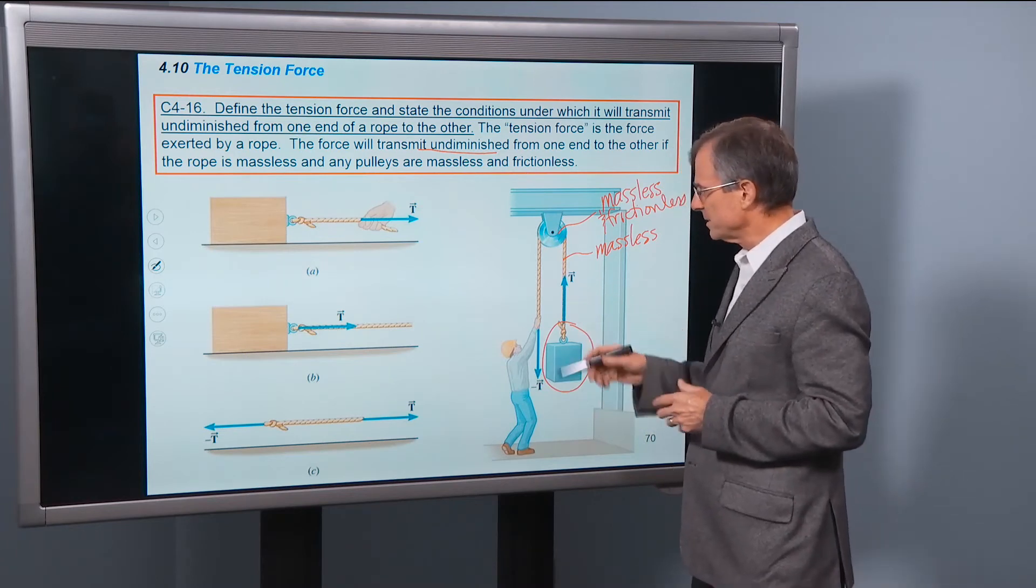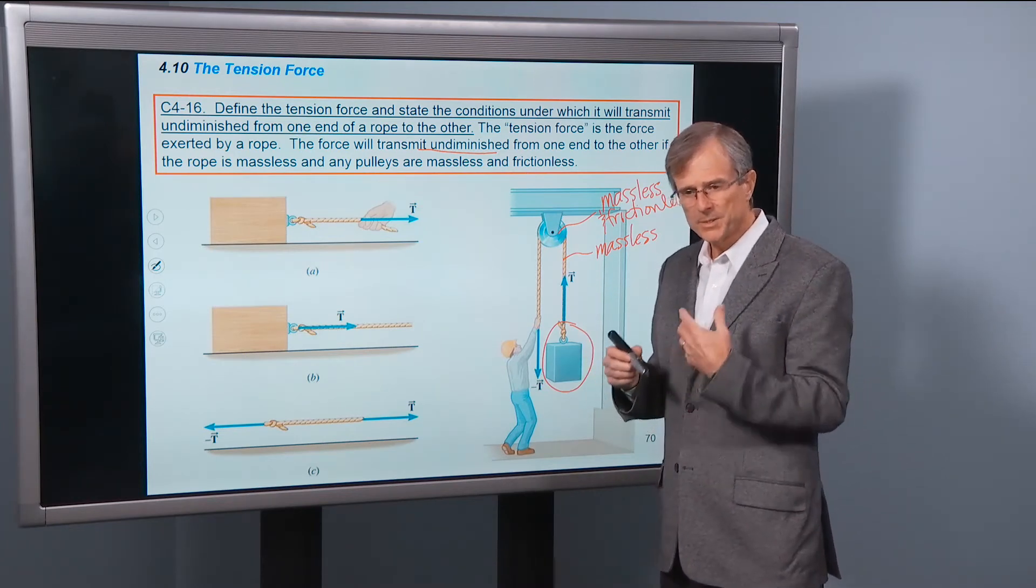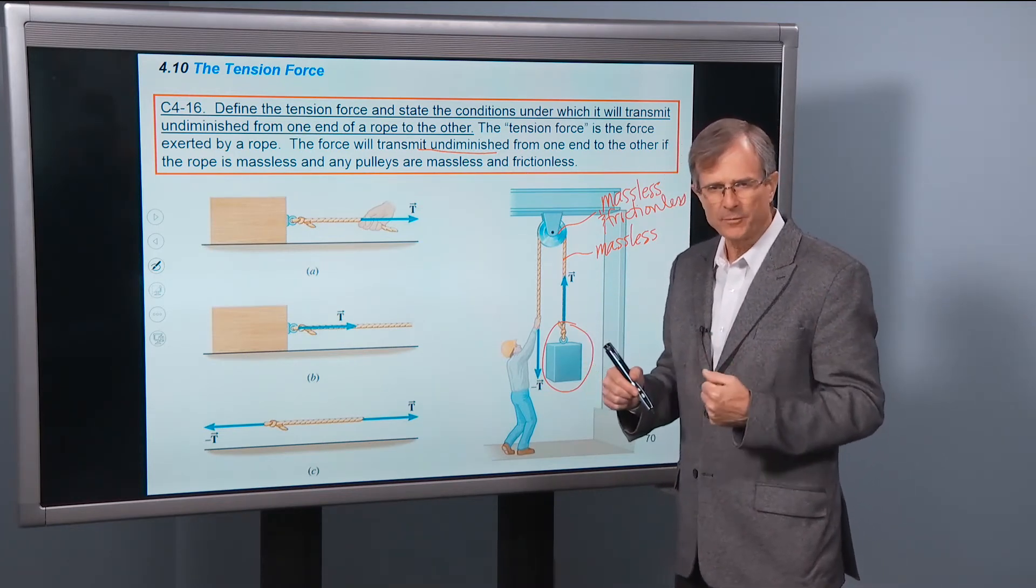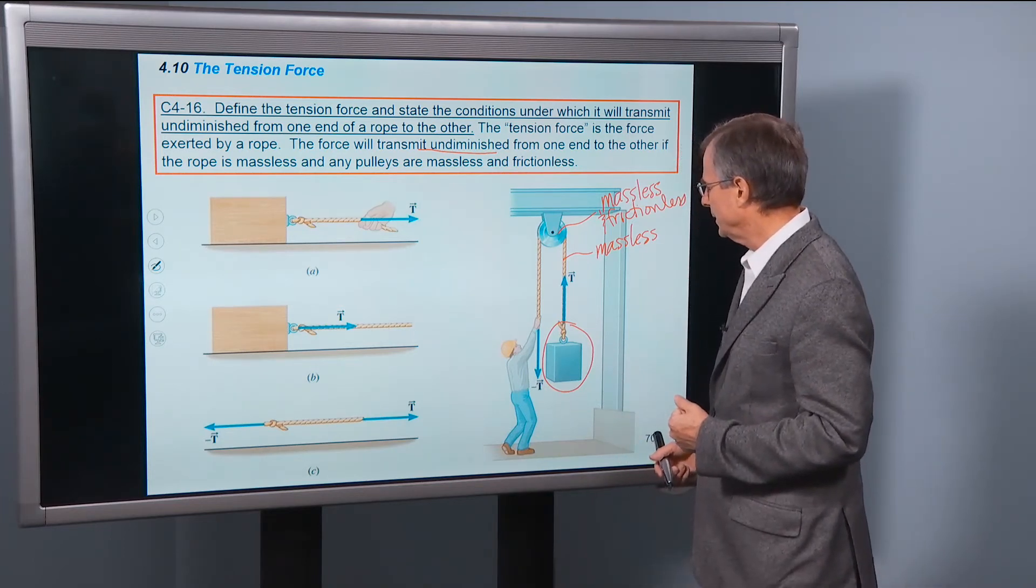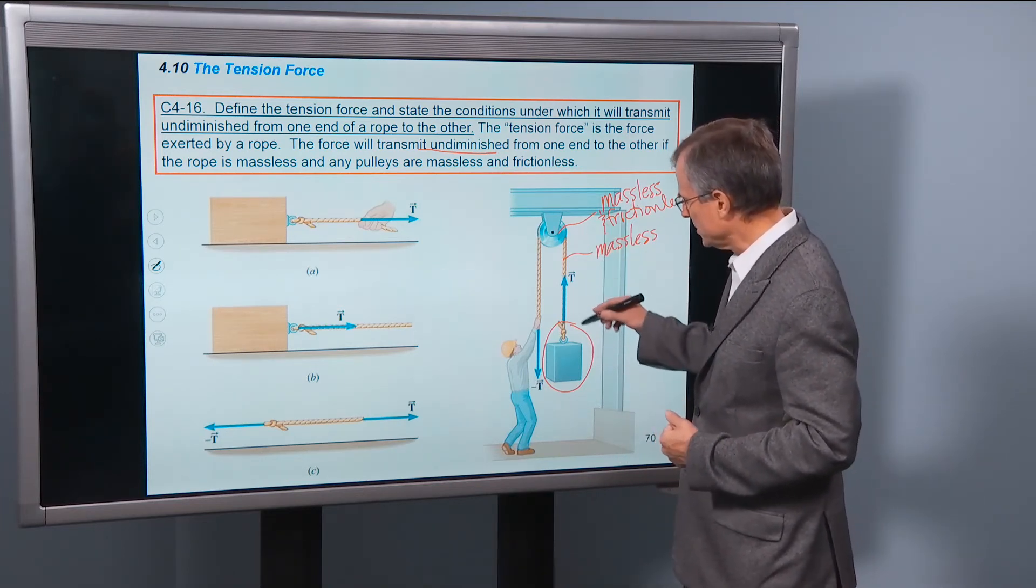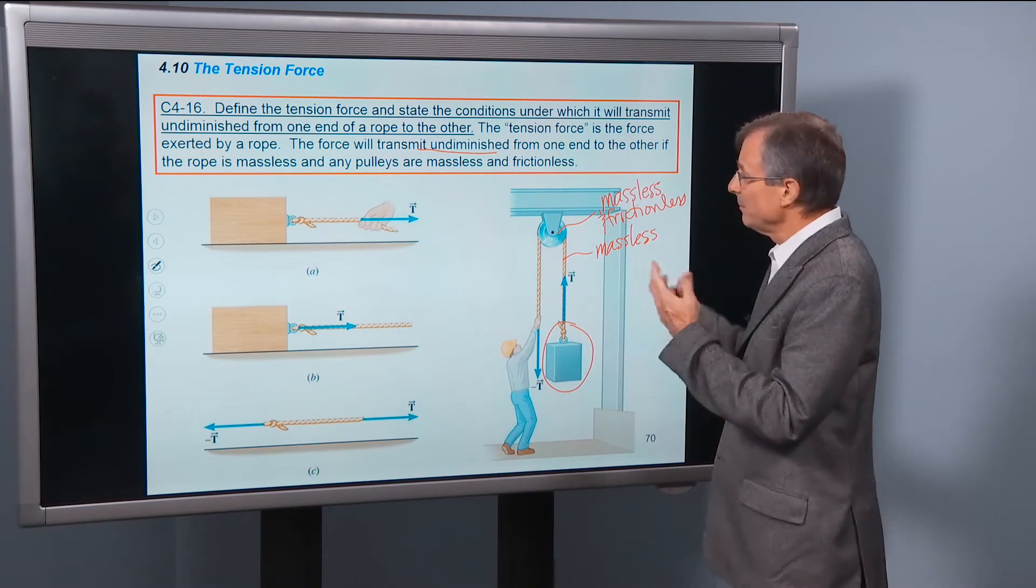If the rope is massive, then that's going to add to the weight that's going to have to be carried. And depending on how much mass is on either side, that's how that works.